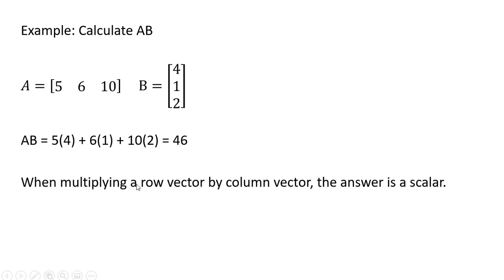So when multiplying a row vector by a column vector, assuming again the same number of elements, your answer will be a scalar, a single number.